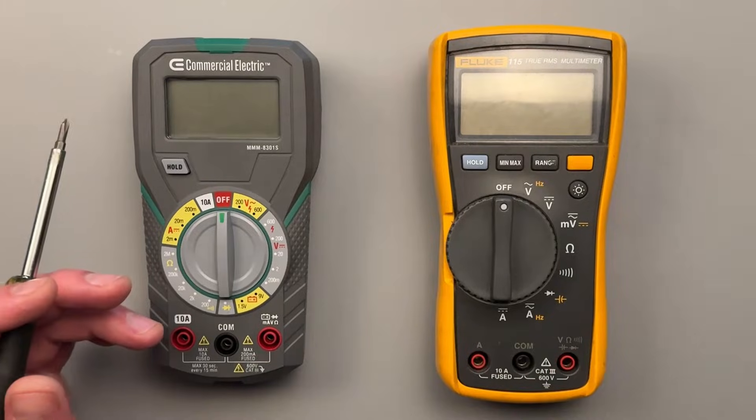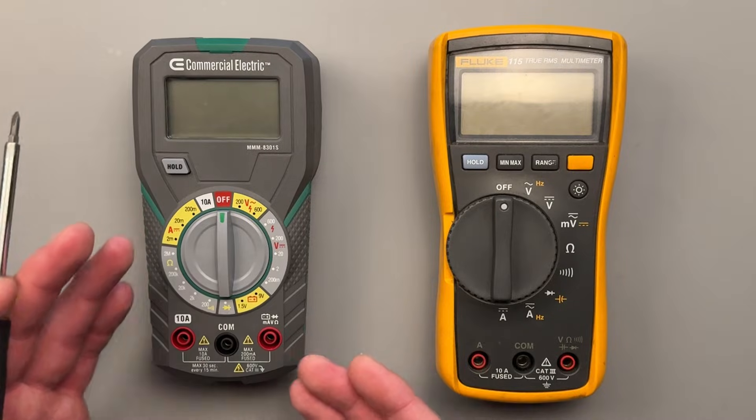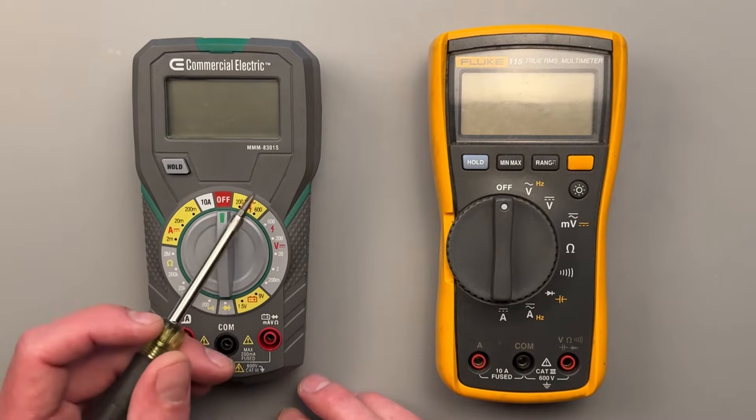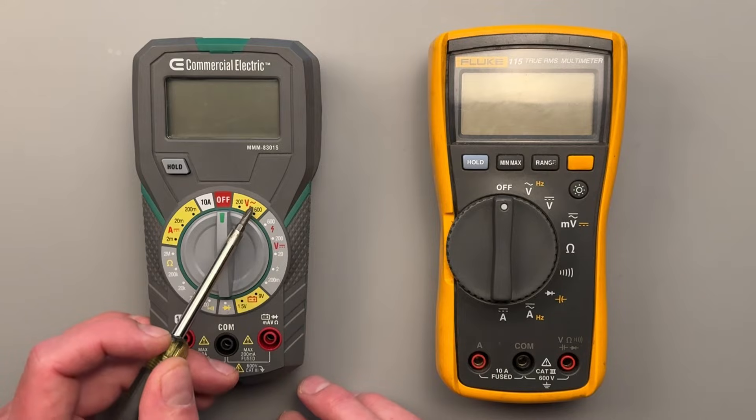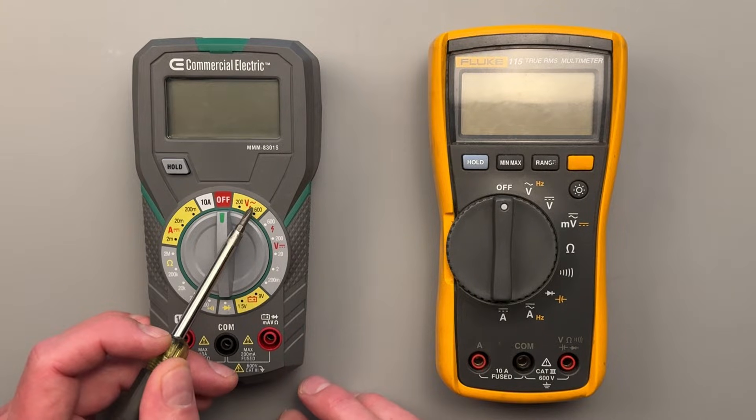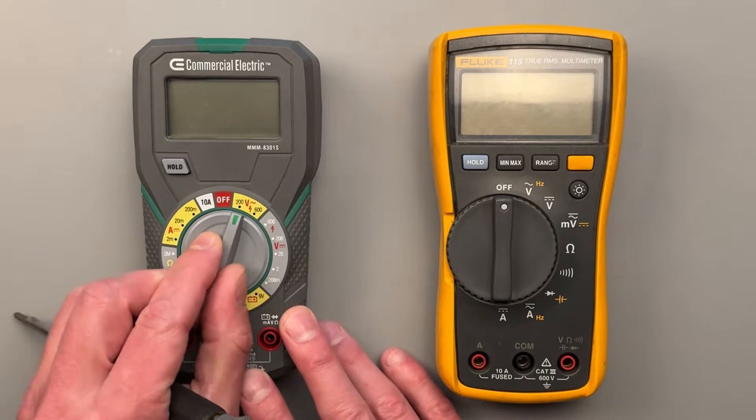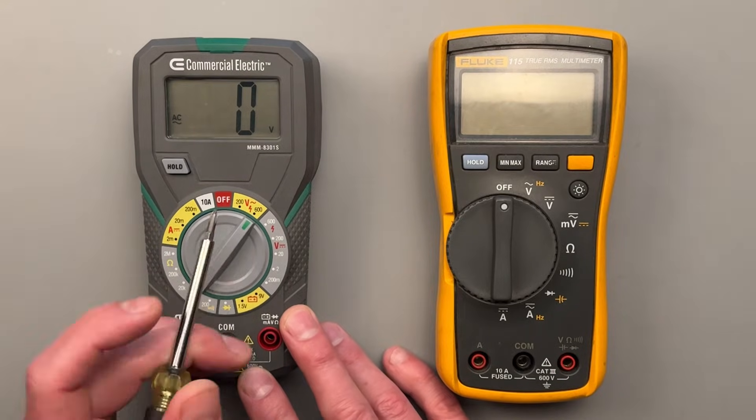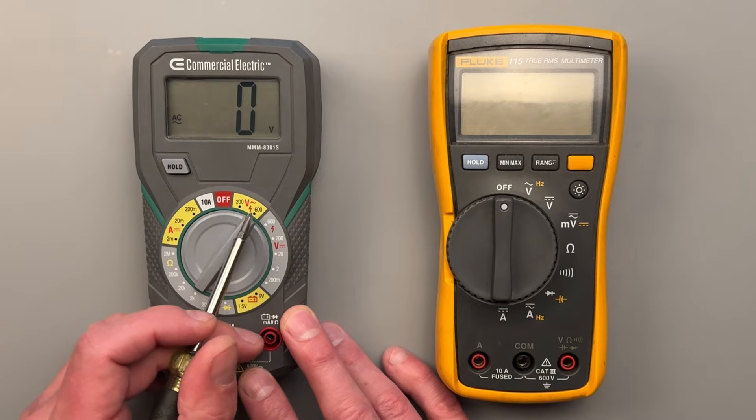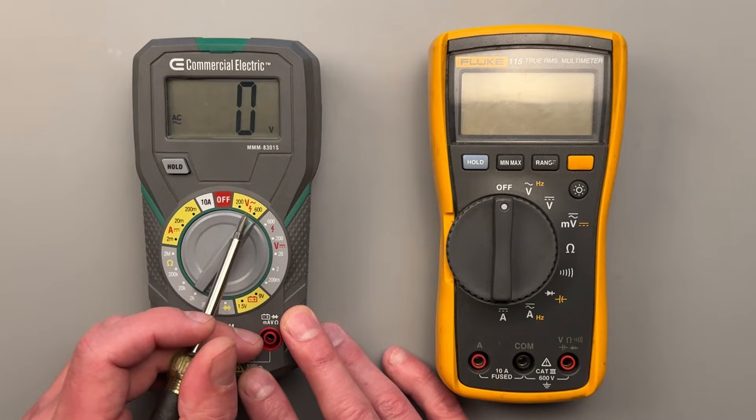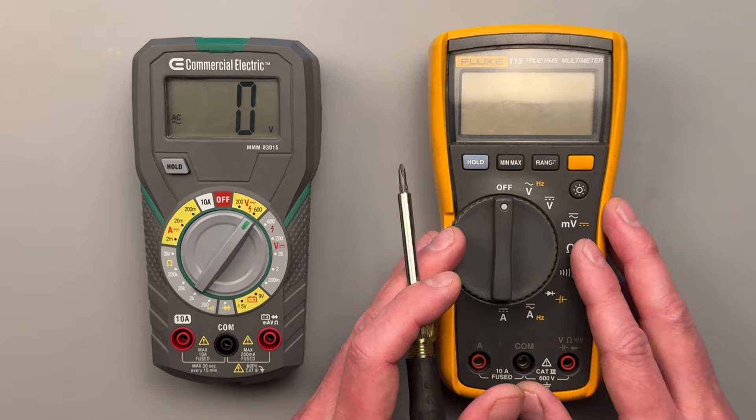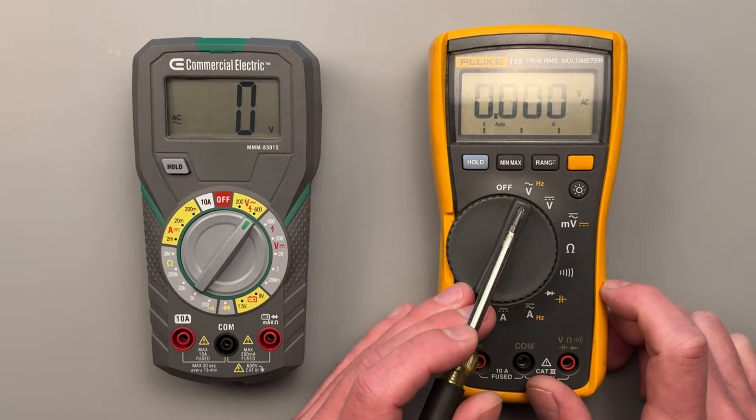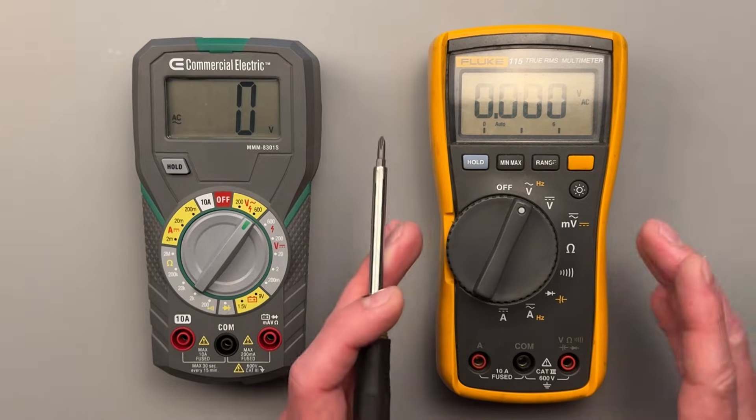Let's compare the settings of two meters. On the left is a manually selecting meter and on the right is an auto-ranging meter. For our voltage AC setting on the manual meter, we'll see that there are two options available. One option is indicating that it is able to read up to 200 volts AC. The second option is indicating that it is able to read up to 600 volts AC. The meter on the right simply has one AC voltage option and is capable of reading from 0 to 600 volts AC.